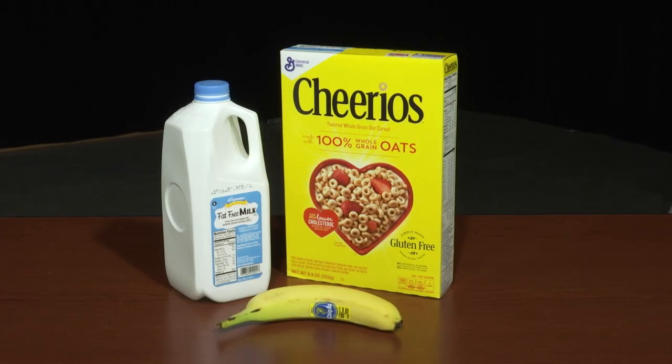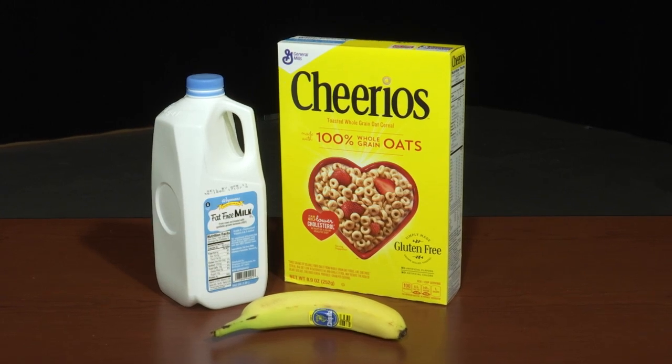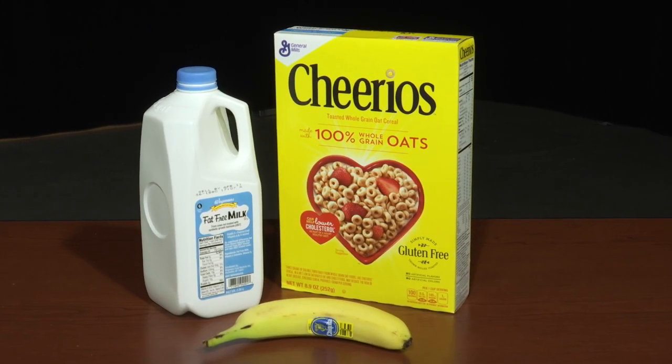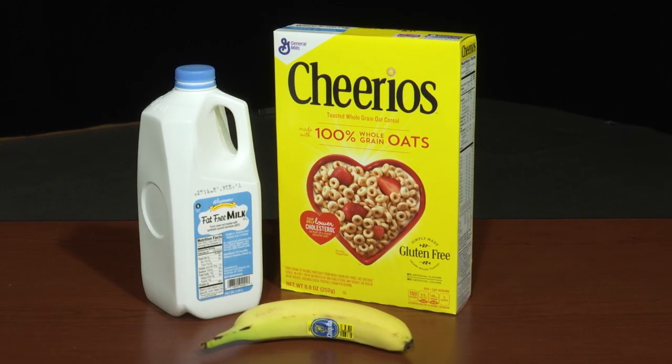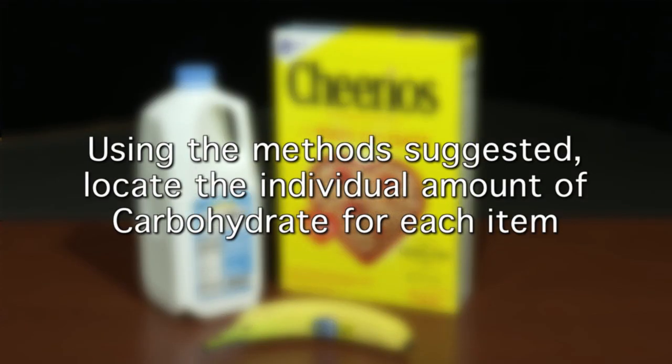Now let's practice carbohydrate counting with a typical breakfast meal consisting of Cheerios, milk, and a banana. To figure out the total carbohydrate in this meal, we need to find the carbohydrate count for each item individually and add them all together.